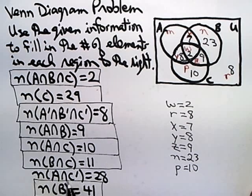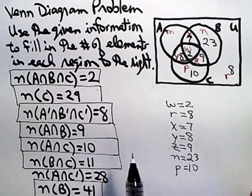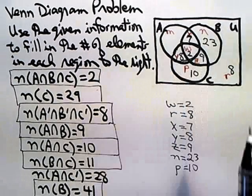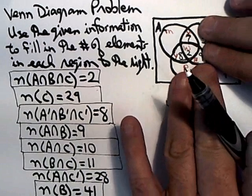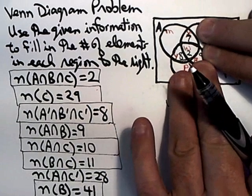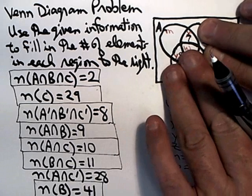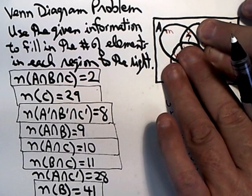And we've talked about this in earlier problems. And if you're still having trouble with this, go back and look at one of the earlier problems. A intersect with C complement means the things that are in A but at the same time are not in C. So the things that are in A but at the same time are not in C. So I'd have to get rid of that.